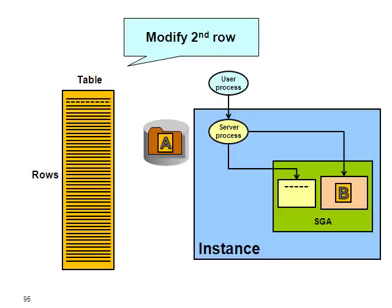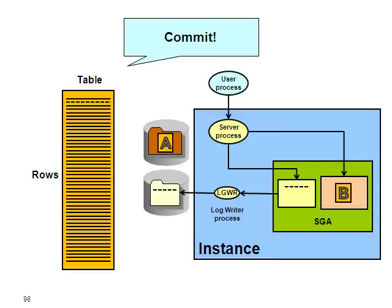The modification is then committed. As the user process you want to validate your transaction, your modification. What happens then is that you have a special background process called the log writer process, who is going to flush the redo log buffer to special files that we call redo log files. The idea here is to flush only the modifications you have done to your table rows instead of flushing the block directly. One block can be 8KB in size for example, while a redo entry can be very small — so that's much more efficient doing it this way.